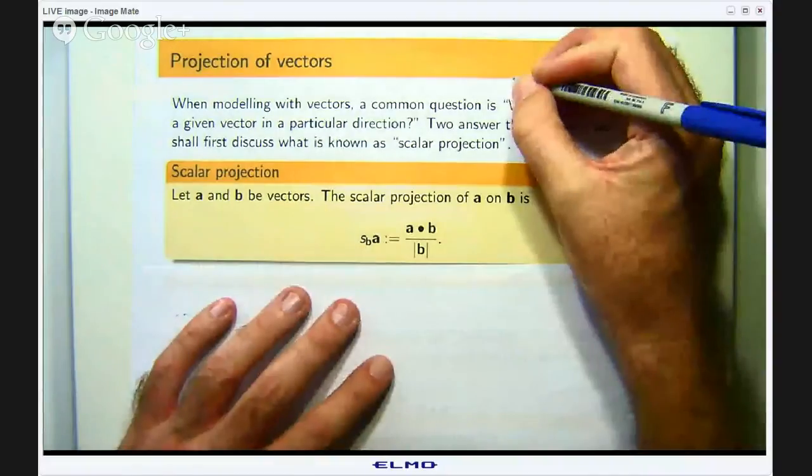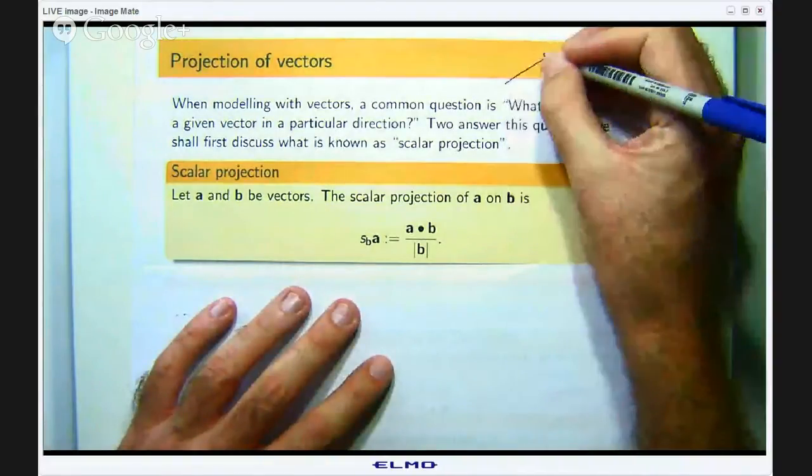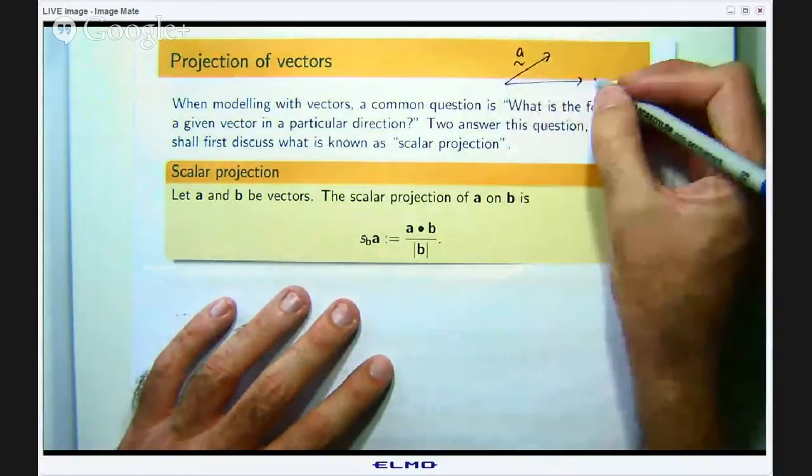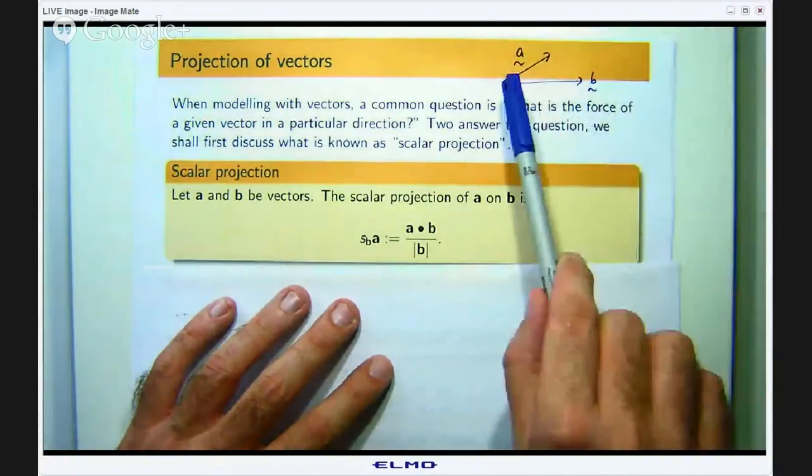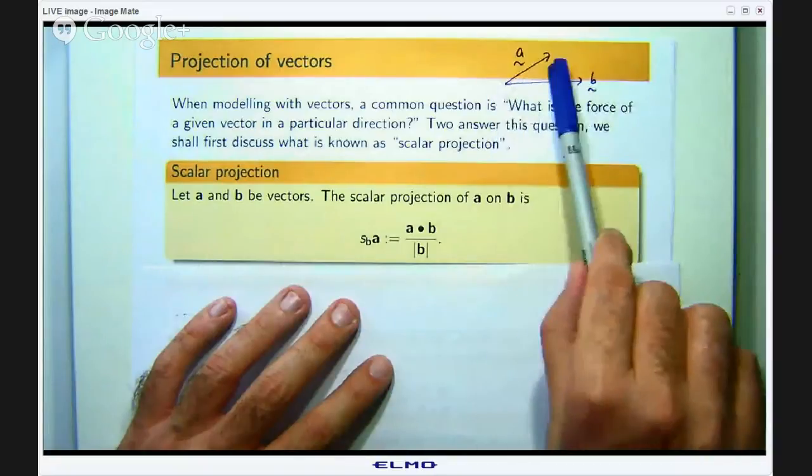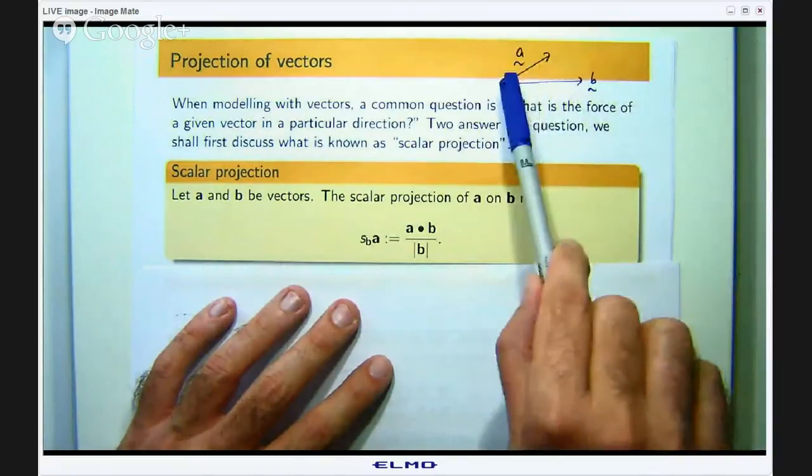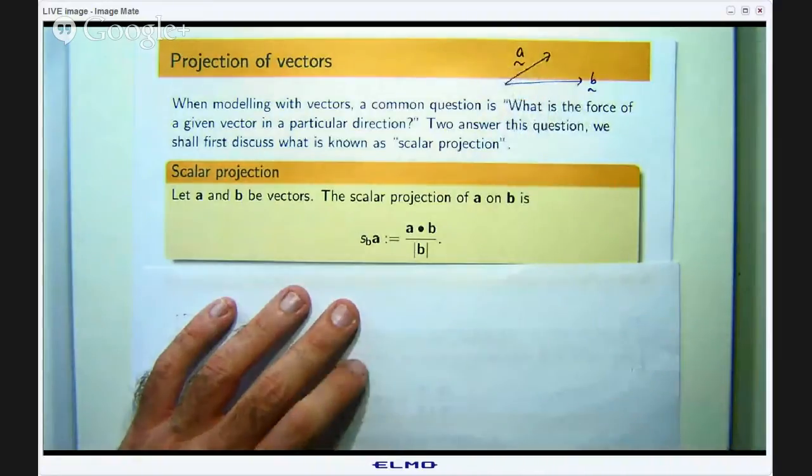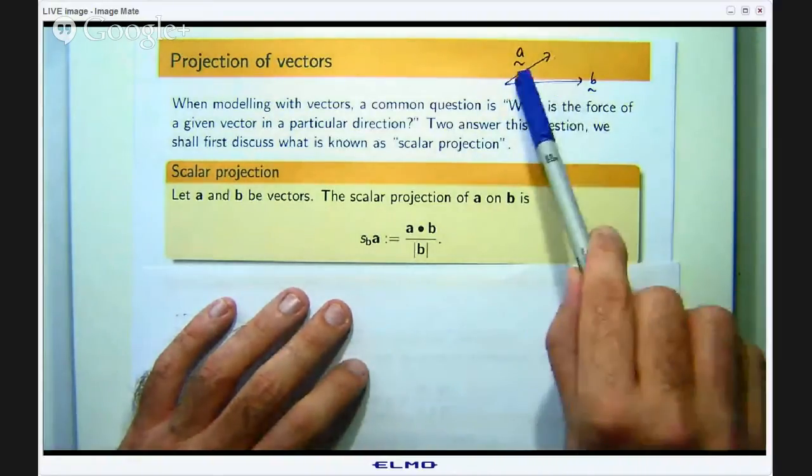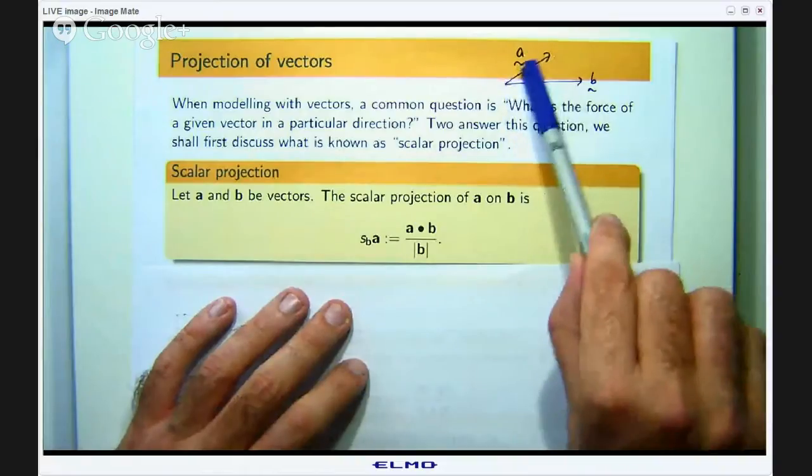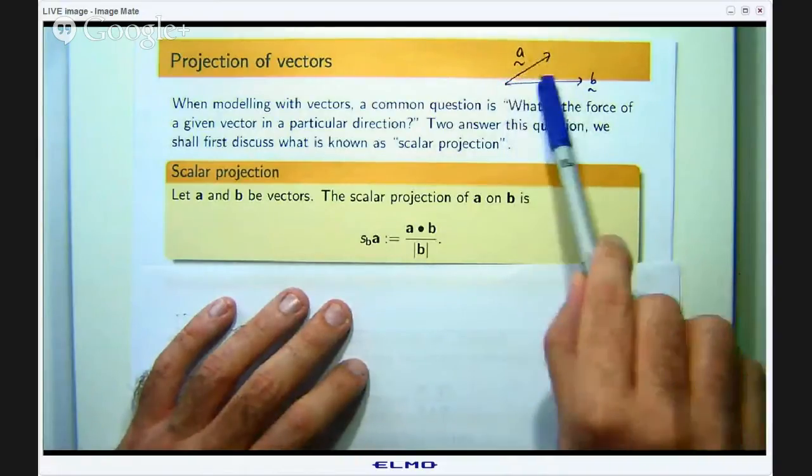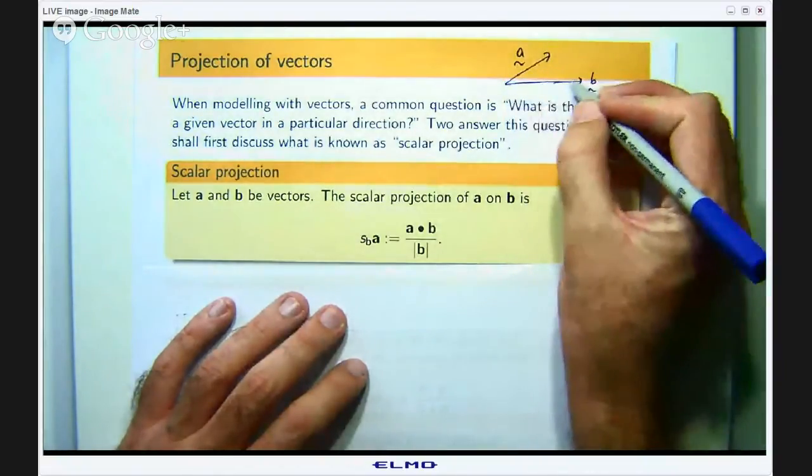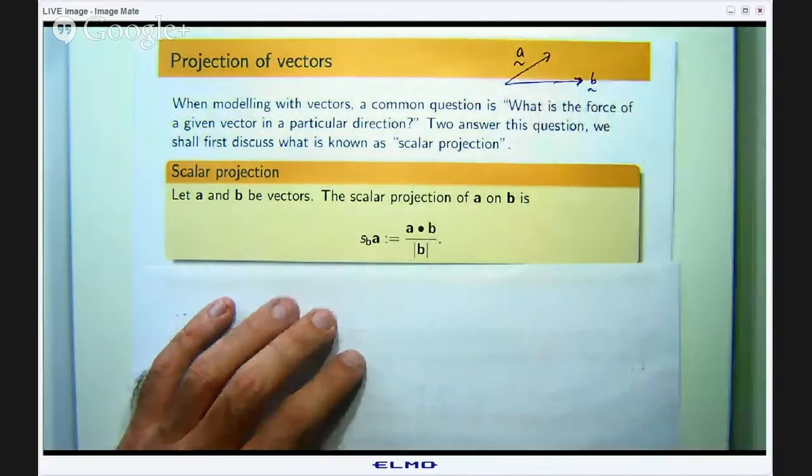For example if I have a vector a and a vector b, a good question is: if a is a force, how much of this force is being directed in the direction of the vector b? How much of the force associated with vector a is being distributed or being in the direction of that vector b?